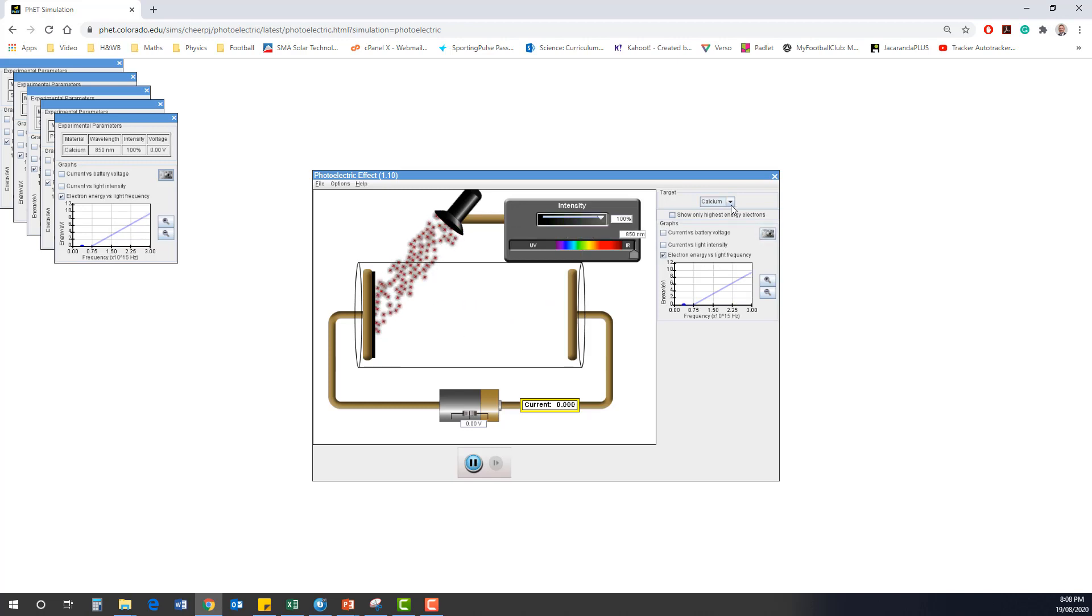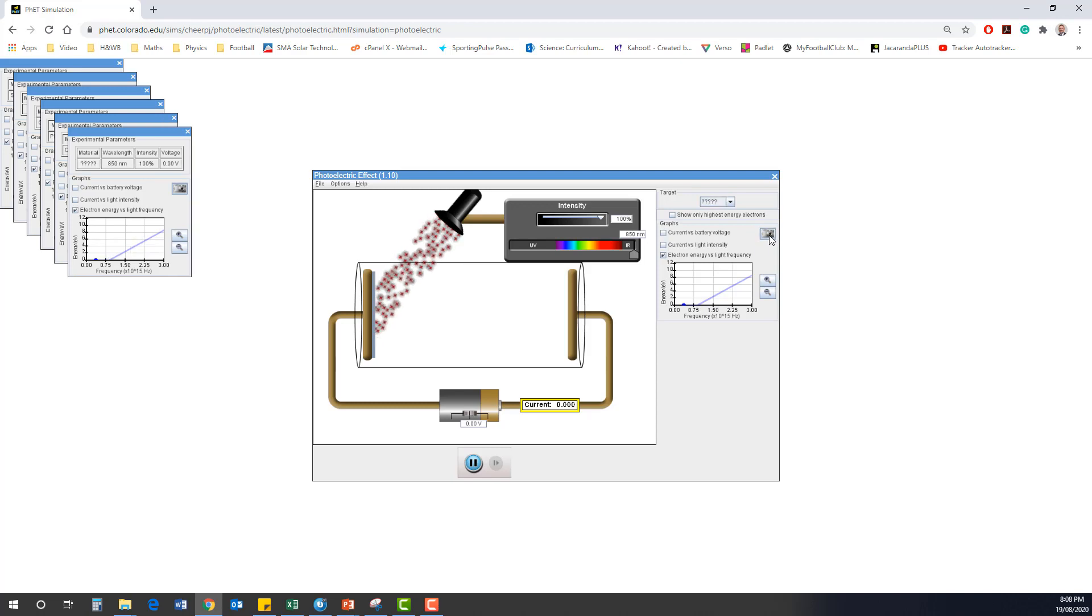And finally we have an unknown sample which we'll take a picture of as well. So we'll look at what energies we get with the change of our frequency. Okay, so this is an energy versus frequency graph and of course we take a picture. Let's now analyze these graphs.